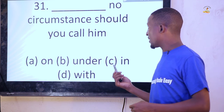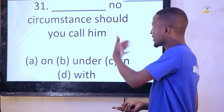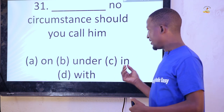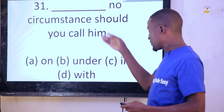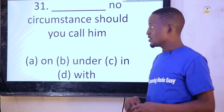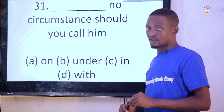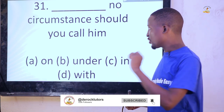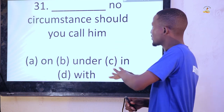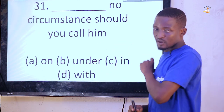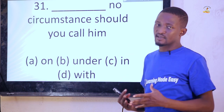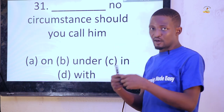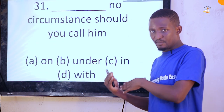'There's no circumstance — should you call him?' We are talking about which preposition goes with 'circumstance': on, under, in, with. When talking about circumstance, you say 'under no circumstance.' Under no circumstance should you call him. Compare: 'on no condition' — if it were 'condition,' you would use 'on.' Also: 'under no guise.' These are collocational prepositions and how they should be correctly used.